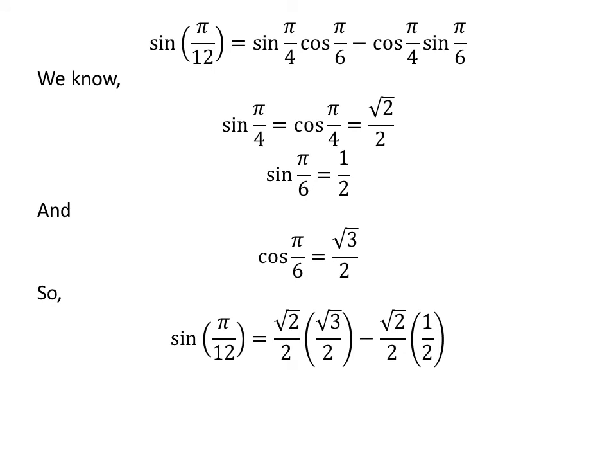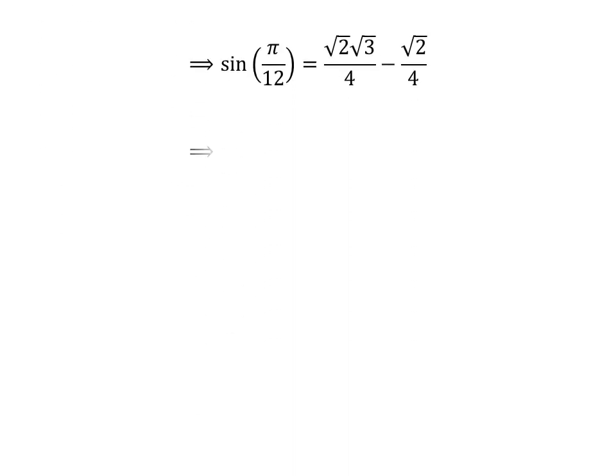Plugging the above values into the equation gives us sine of pi upon 12 is equal to square root of 2 upon 2 times square root of 3 upon 2 minus square root of 2 upon 2 times half. Further simplification gives us sine of pi upon 12 is equal to square root of 2 times square root of 3 upon 4 minus square root of 2 upon 4. Adding the fractions gives us sine of pi upon 12 is equal to square root of 2 times square root of 3 minus square root of 2, all upon 4.